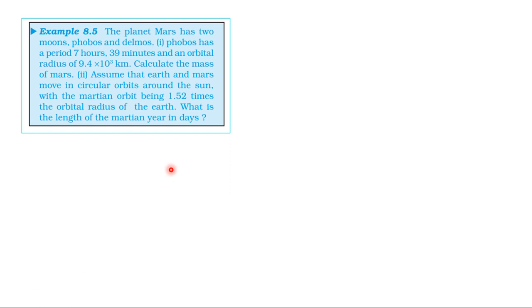From the NCRT textbook, from the topic Gravitation, we will take example 8.5. The planet Mars has two moons, Phobos and Deimos. Phobos has a period of 7 hours 39 minutes and an orbital radius of 9.4 × 10³ kilometers.